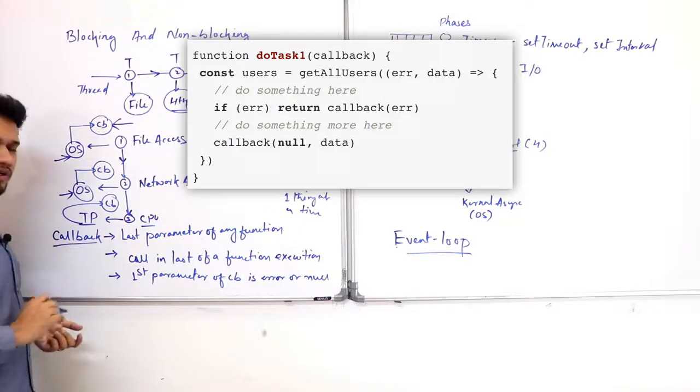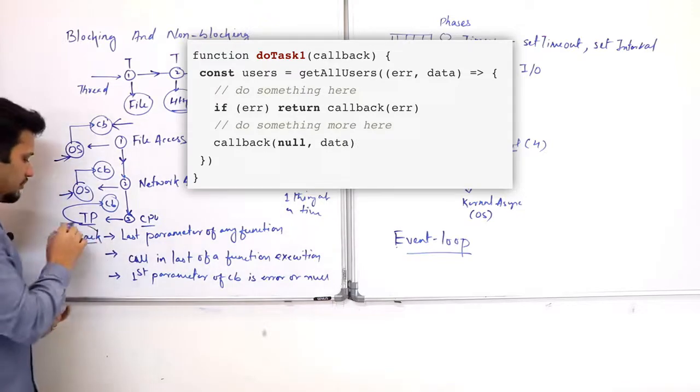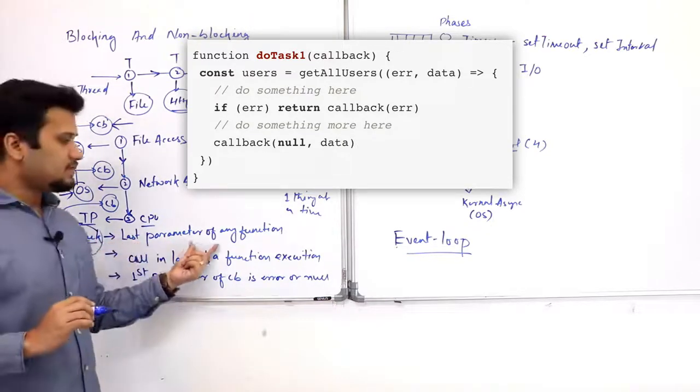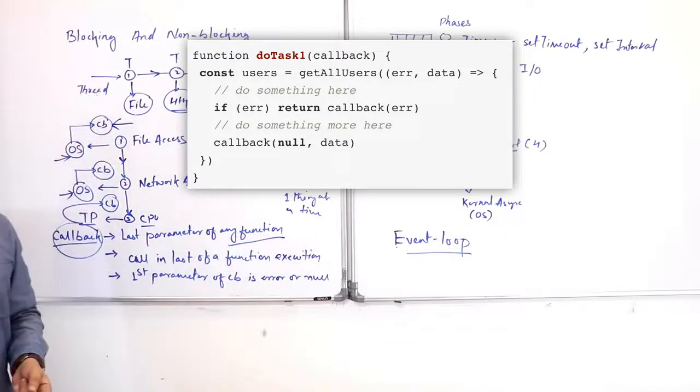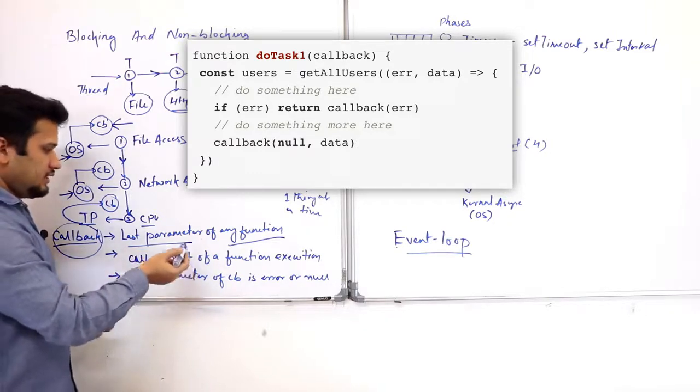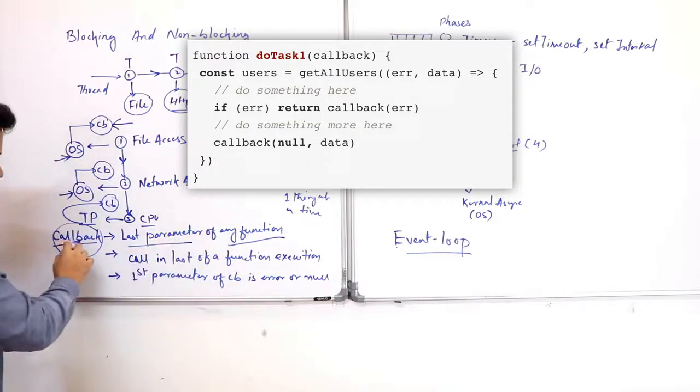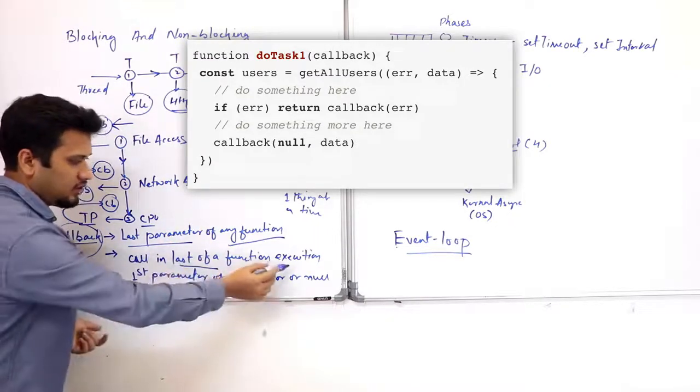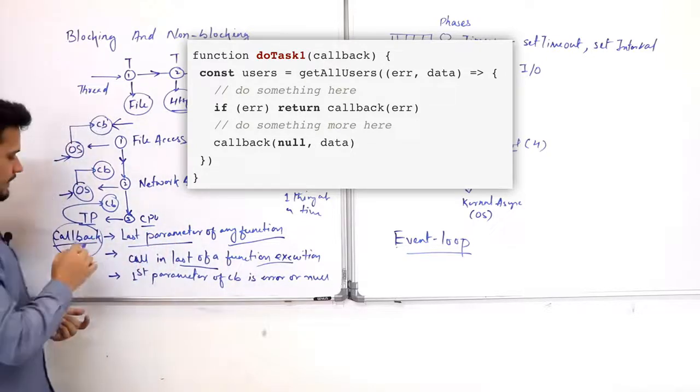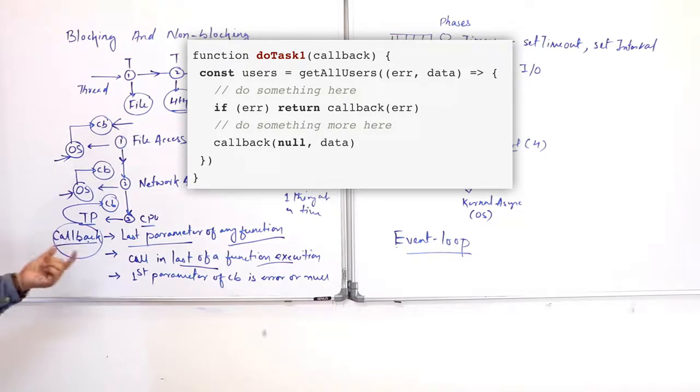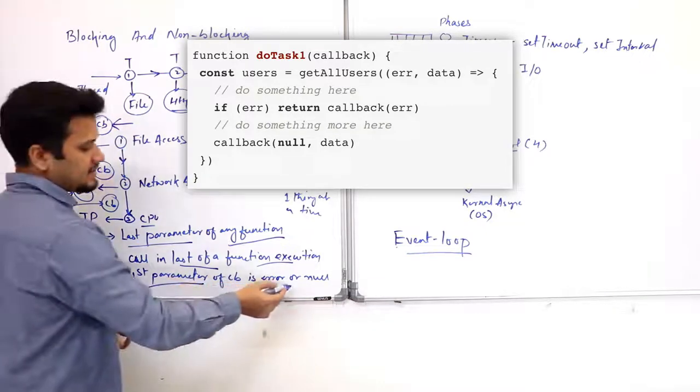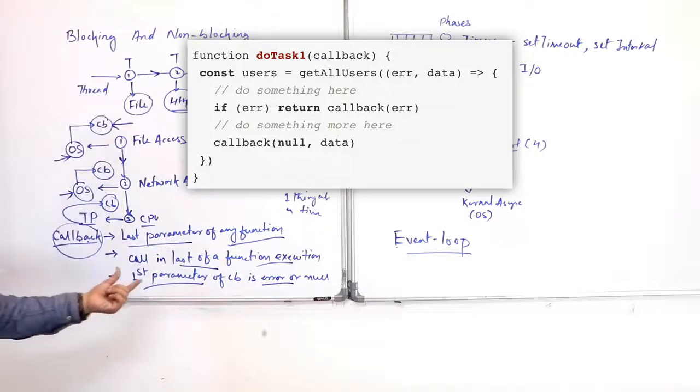The convention that NodeJS follows for the callback is: whenever you are providing a callback, it should be the last parameter of any function. Callback should be passed as the last parameter of the function—this is the convention that NodeJS follows. Now we can call the callback as the last line of the function execution. And in the callback, callback is a JavaScript function, its first parameter is the error. If there is no error, we will pass null into it. So this is the convention for callback.